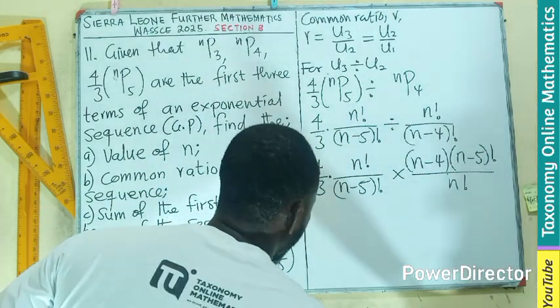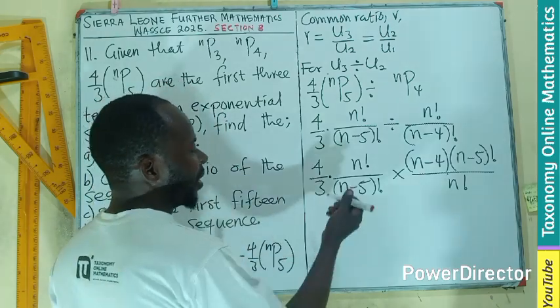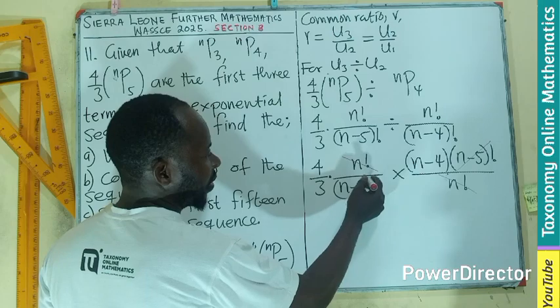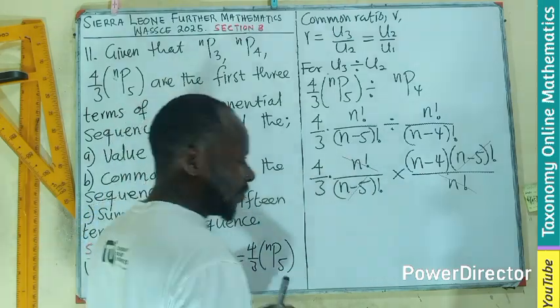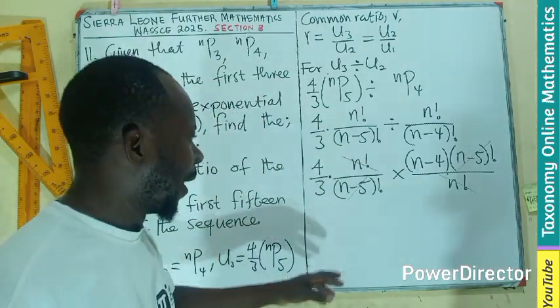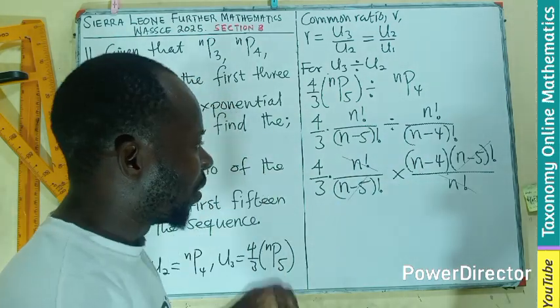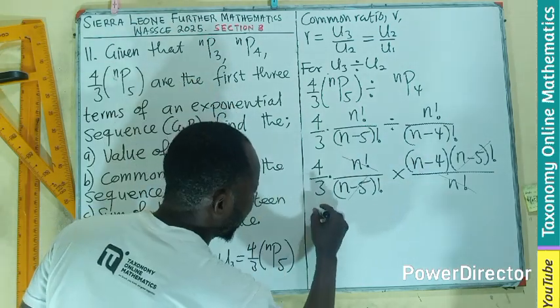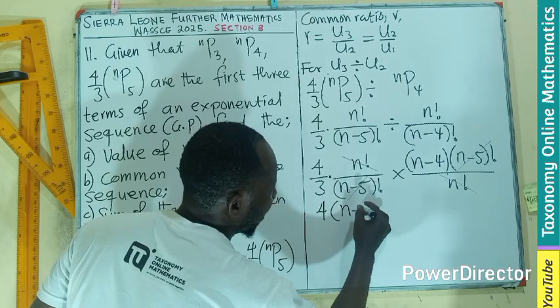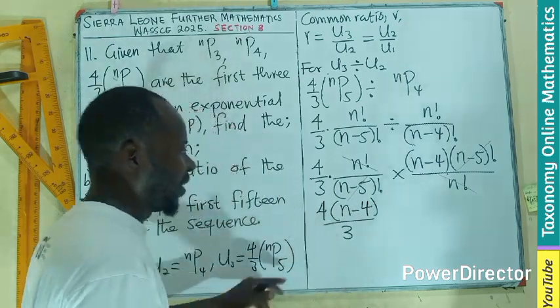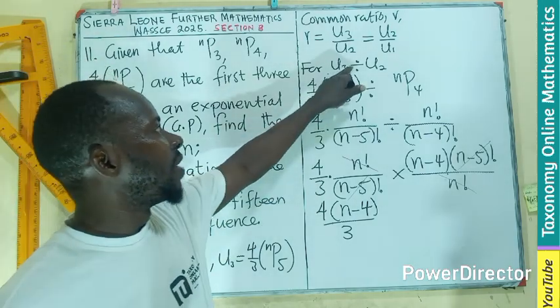If you cross-check, you can see that this n factorial will cancel this, this will cancel this. So I should be left with 4 on 3 multiplying n minus 4. So I'll be having 4 multiplying n minus 4 divided by 3. This is just for the first part.